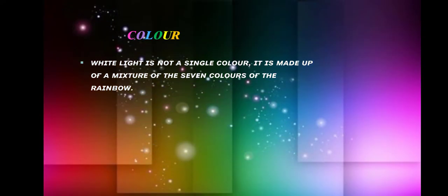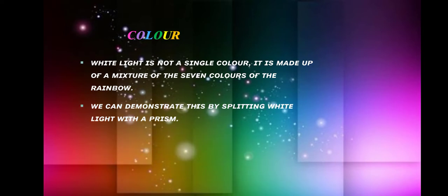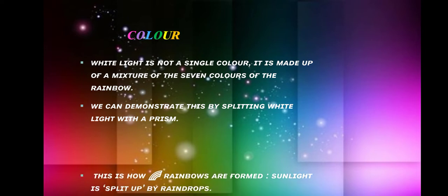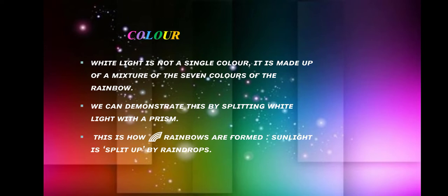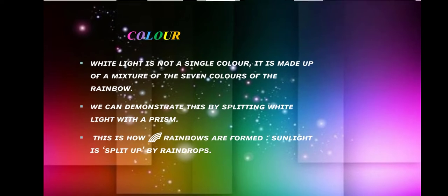Color. White light is not a single color — it is made up of a mixture of seven colors of the rainbow. We can demonstrate this by splitting white light with a prism. This is how rainbows are formed; sunlight is split by raindrops.